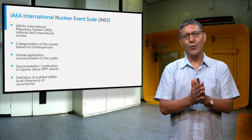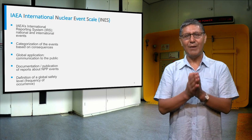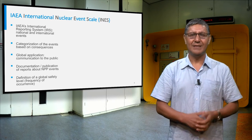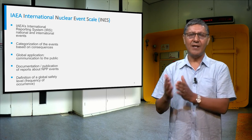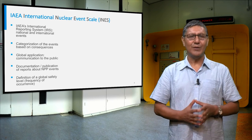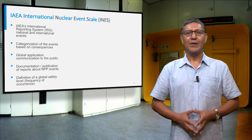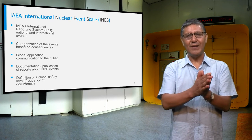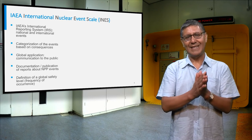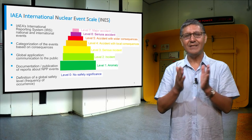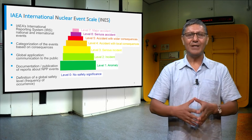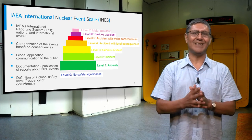Events which occur at any nuclear power plant of a member state are collected in national centers and passed over to the EAA. There is an international reporting system which collects all events globally. The INES scale groups the events into seven categories according to radiological risk.